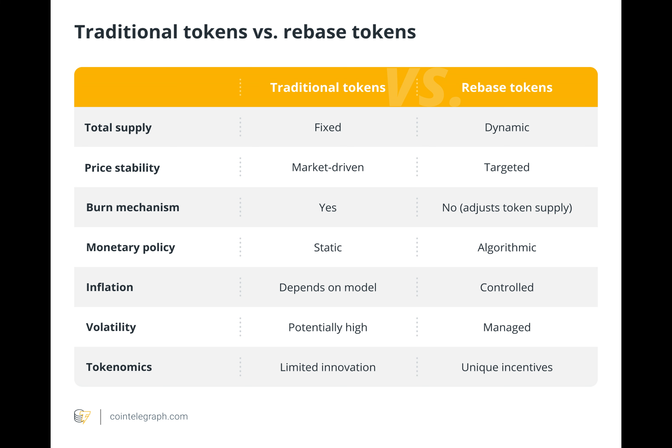However, rebase tokens use frequent, algorithm-driven modifications to reach predetermined targets, employing cutting-edge techniques to control inflation, encourage participation, and lessen price volatility. Rebase tokens can adjust to market conditions due to this novel strategy, which aims to stabilize value in a manner that traditional tokens — whose value is determined only by fixed supply and market demand — cannot. This essential distinction highlights the evolving nature of digital assets and their diverse applications within the cryptocurrency ecosystem.